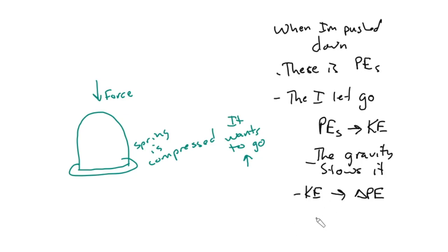So in the reverse of the last one, if I start with some PEs, I will then convert it into delta PE. So one half Kx squared will now be mgh. You'll see a bunch of those problems in the problem set below.